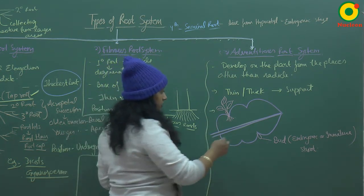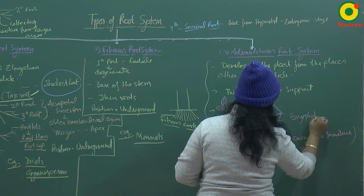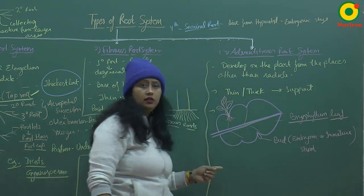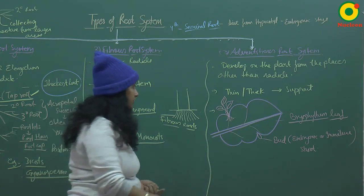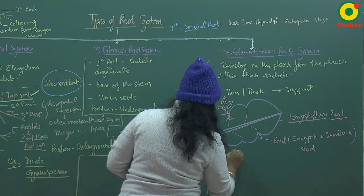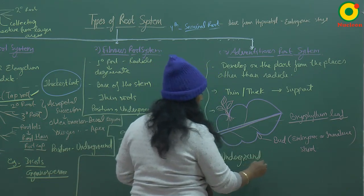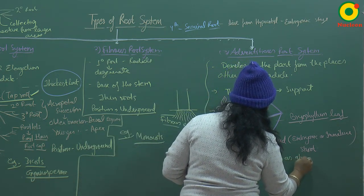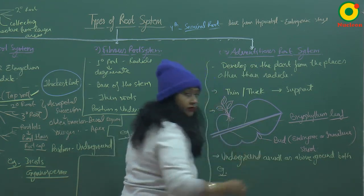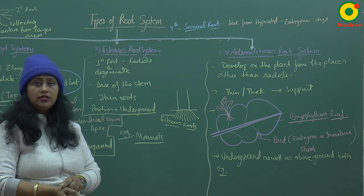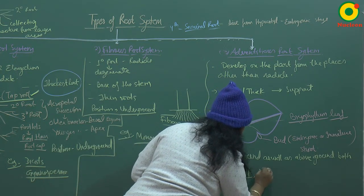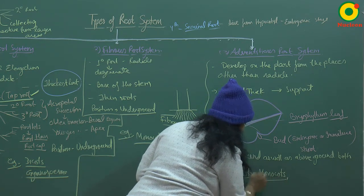The position of adventitious roots can be underground as well as above ground. You can find adventitious roots in dicot plants, monocots, and in pteridophytes.